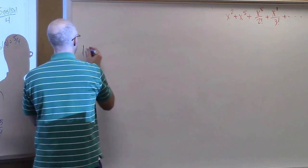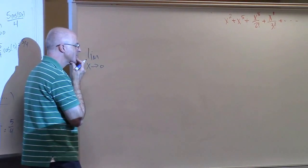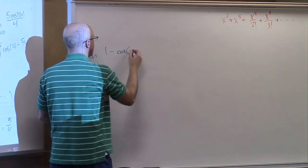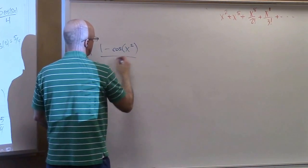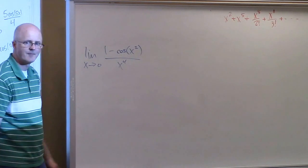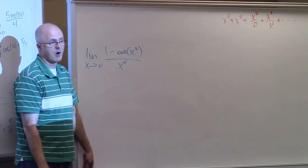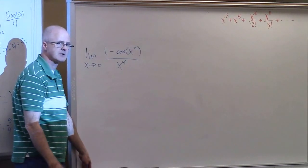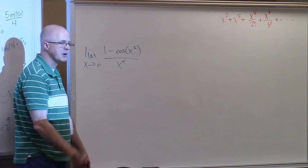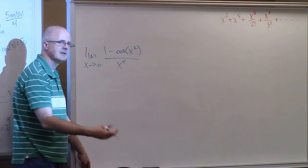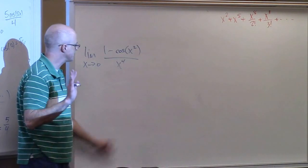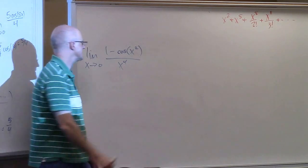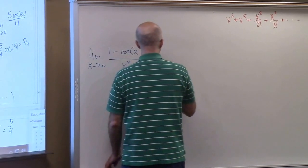Let's do a more complex example: the limit as x goes to zero of one minus cosine of x squared, all over x to the fourth. This is a zero over zero indeterminate form — as x goes to zero, both top and bottom go to zero, because cosine of zero is one. You could try L'Hôpital's rule — maybe four times because of the fourth power — but it might be quicker to use the series, since you only need to apply it once.